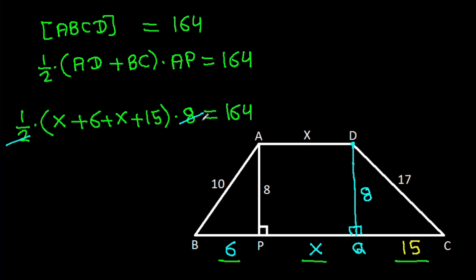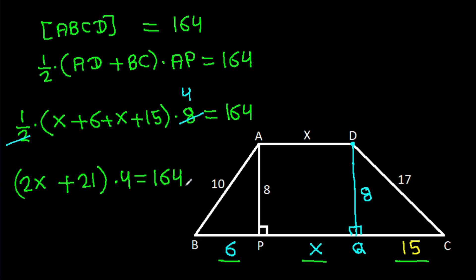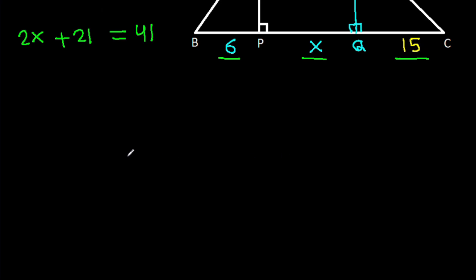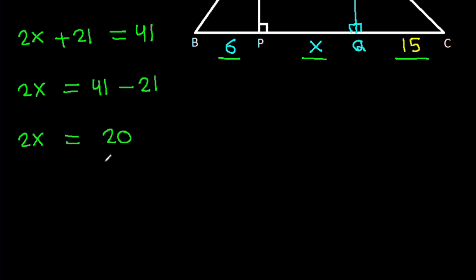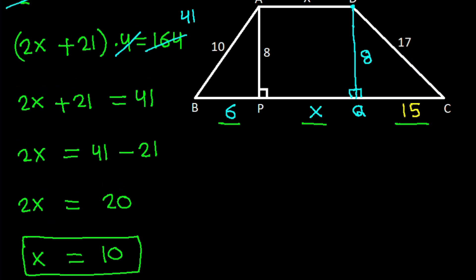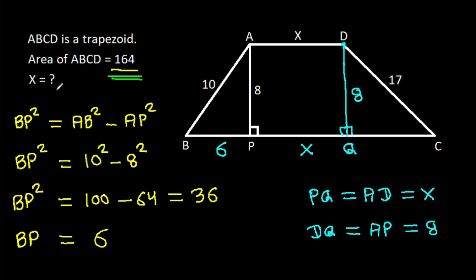Simplifying: 4 times (2X + 21) equals 164, so 2X + 21 equals 41. Therefore 2X equals 41 minus 21, which is 20. So X equals 10.